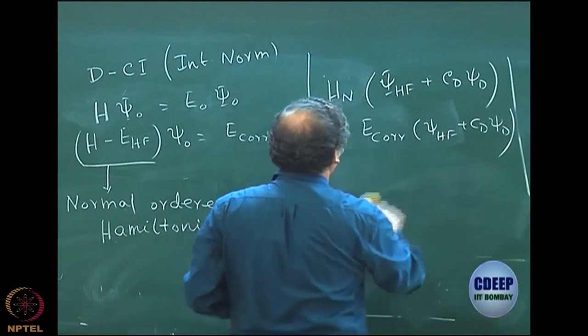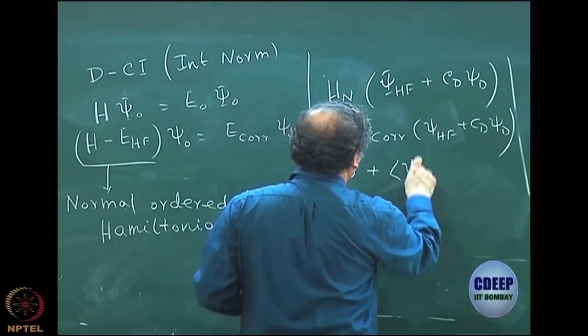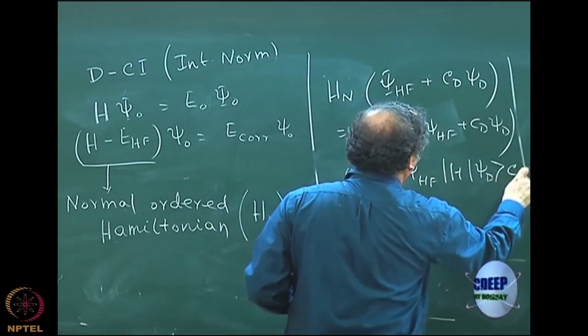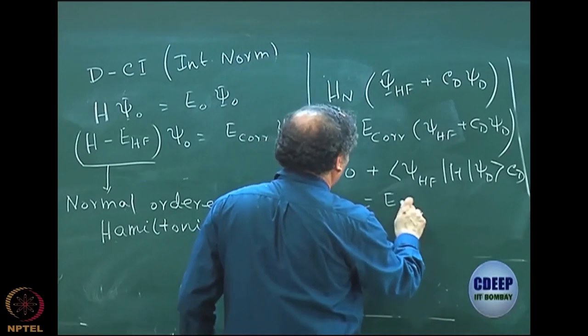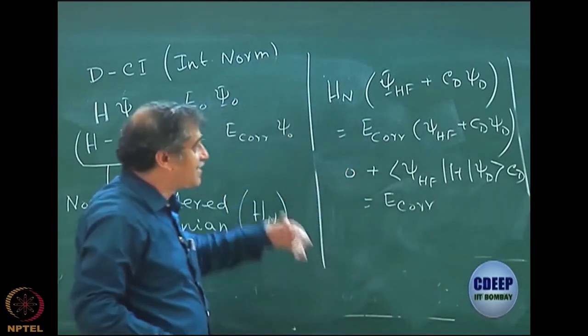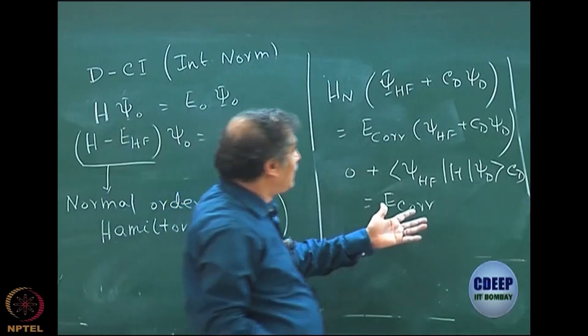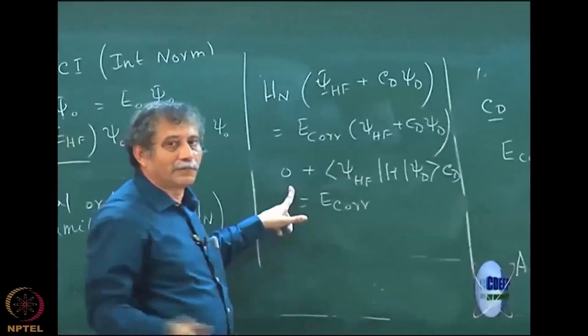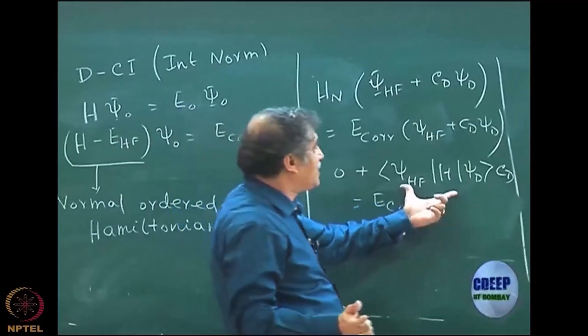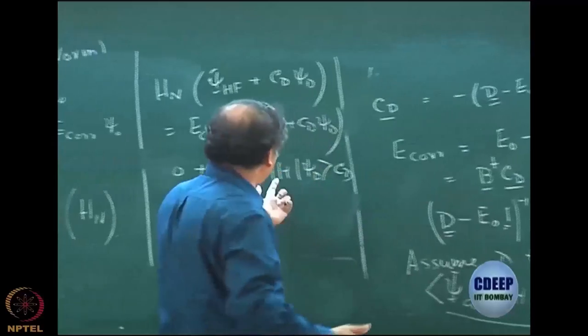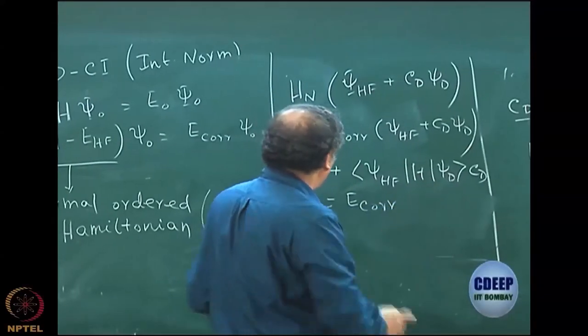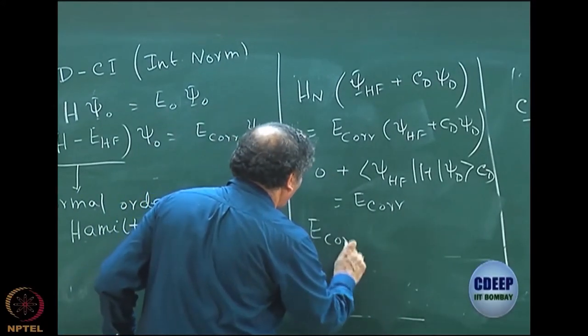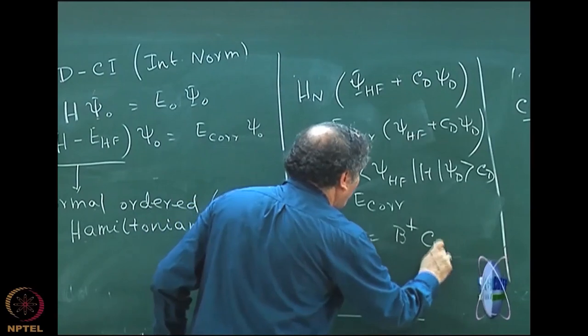I can write this as zero plus psi Hartree-Fock H psi d into C_d equal to E correlation. So now you see, I write the same expression of E correlation. Remember I had written this expression for E0. Since I have to subtract E Hartree-Fock, this actually went off, that is all. This I told you already, this is E correlation. Remember minus B dagger C_d. This is exactly my B dagger, this is my C_d. So your E correlation becomes B dagger C_d, right?